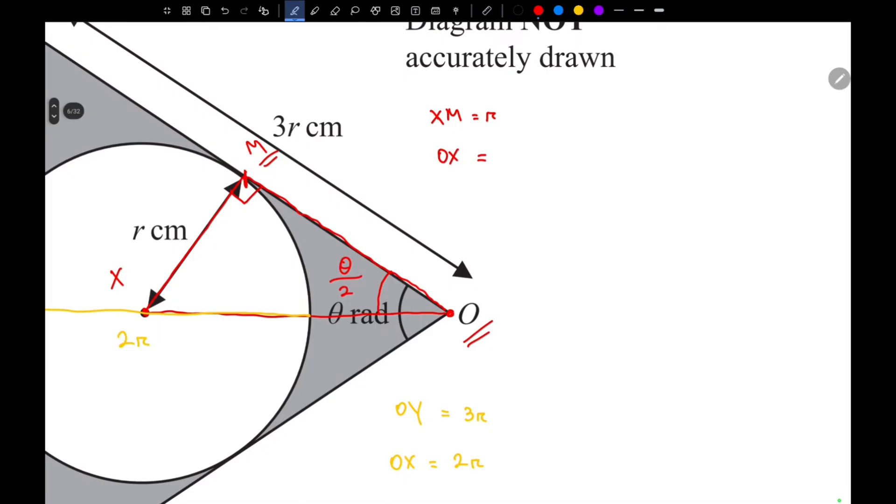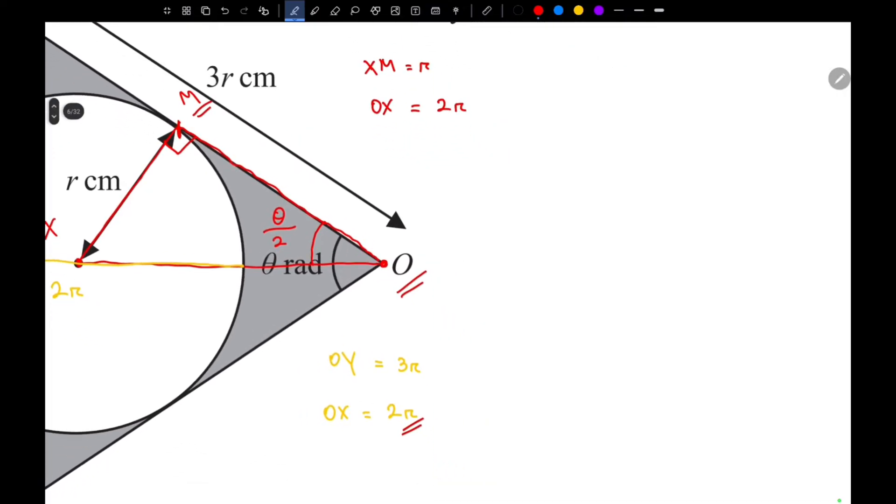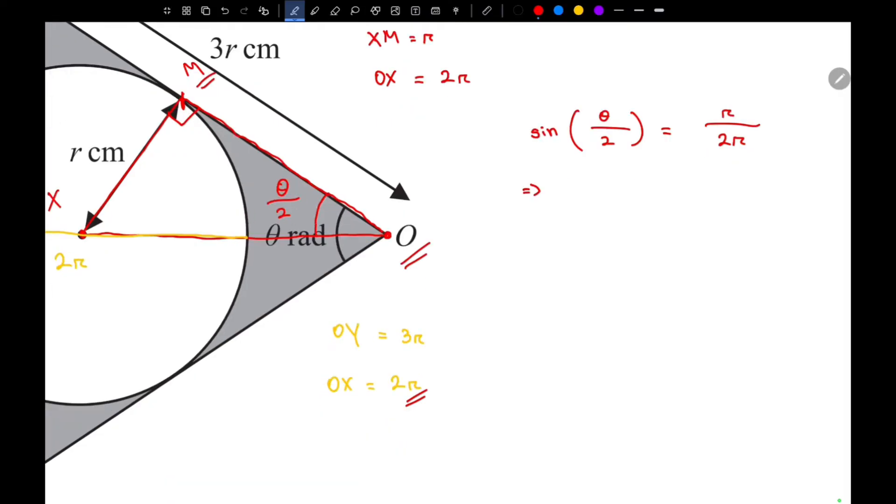So now we can find out the length of OX to be 2R. Now we can say that using simple trigonometry, sin(theta over 2) equals opposite over hypotenuse. So the value of theta over 2 will be π over 6, and the value of theta is π over 3.